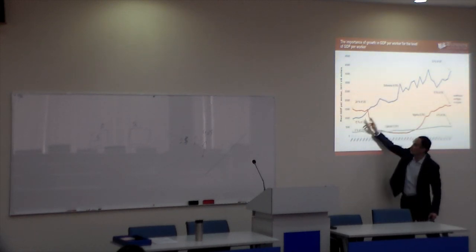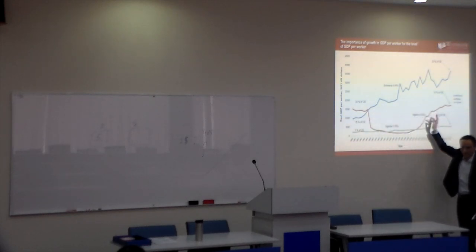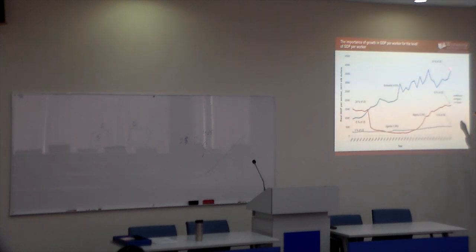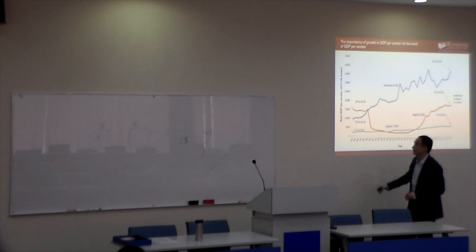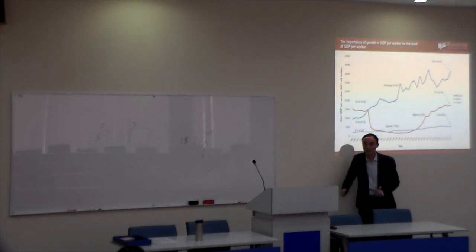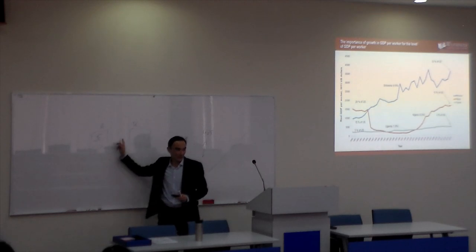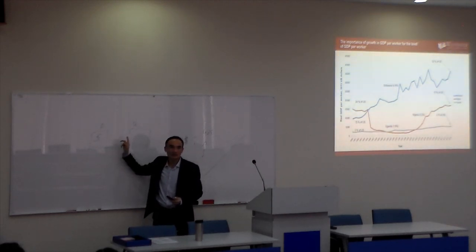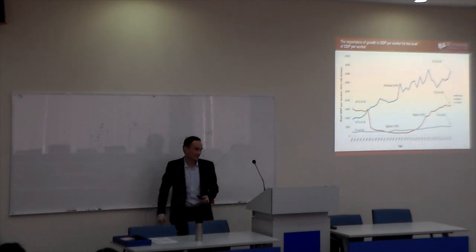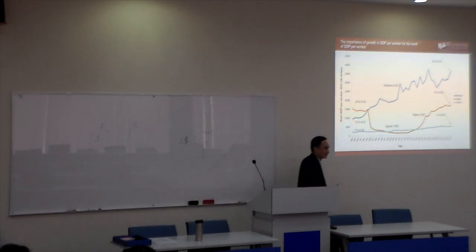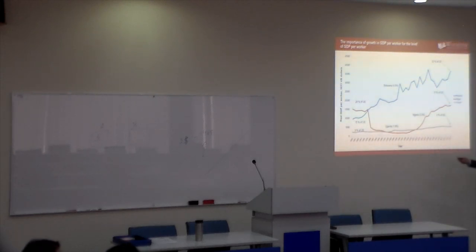Botswana, by contrast, shows a really good trajectory. Their living standard was much lower than Nigeria's at first, but people in Botswana today are living more than two times better. Note: in your coursework, your dependent variable should be real GDP per capita — it must be real. If you use nominal, I will reduce your marks.